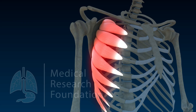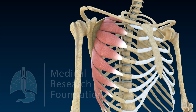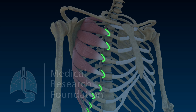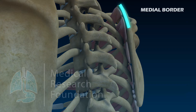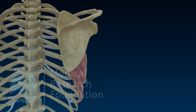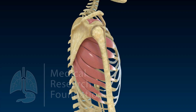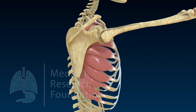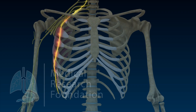Serratus anterior is a fan-shaped muscle situated in the lateral wall of the thorax, also known as the boxer's muscle. It originates from the upper eight ribs via separate digitations and is inserted into the medial border and ventral surface of the scapula. Its actions include protraction of the scapula with pectoralis minor, and fibers from the inferior angle rotate the scapula upwards and laterally. It is supplied by the long thoracic nerve, also called the nerve of Bell.